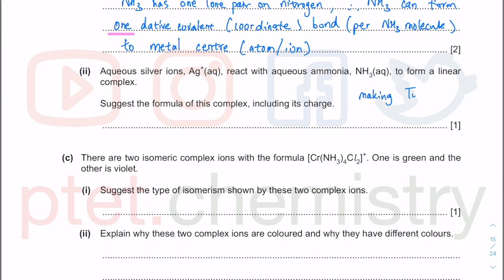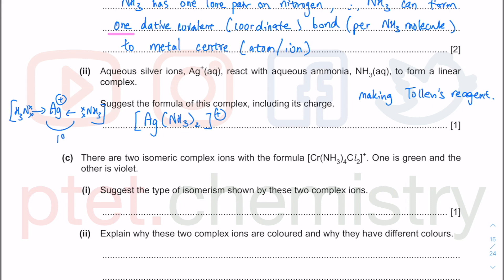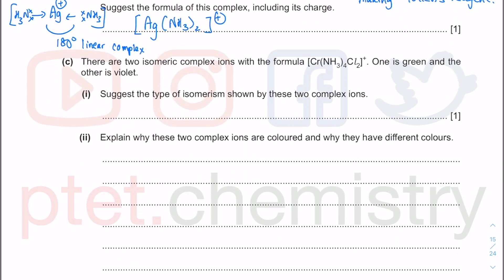Moving on: aqueous silver ions reacting with ammonia essentially makes Tollens' reagent. Ag⁺ reacts with aqueous ammonia to form [Ag(NH₃)₂]⁺, a linear complex where NH₃ uses its lone pair to form two dative covalent bonds at 180°. This colorless species in Tollens' reagent acts as an oxidizing agent for aldehydes only — not ketones — and is itself reduced from Ag⁺ to silver metal (Ag⁰), giving the silver mirror.